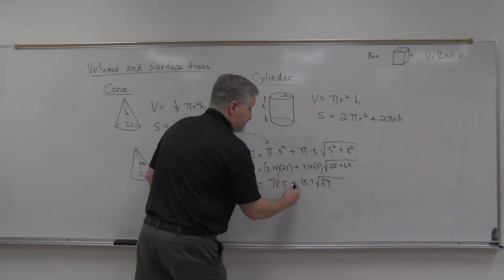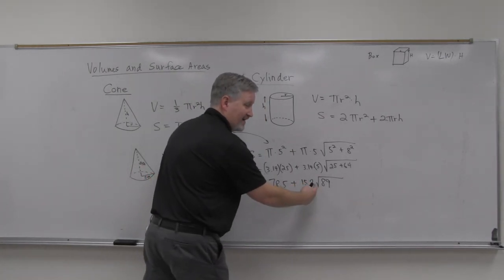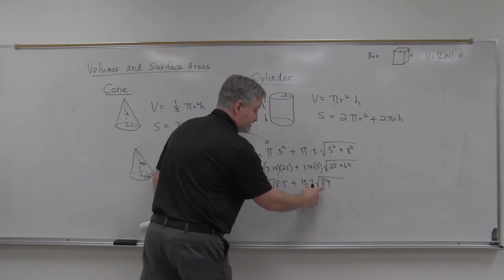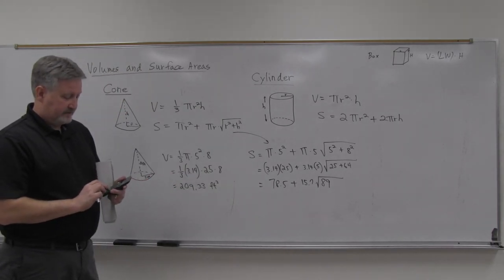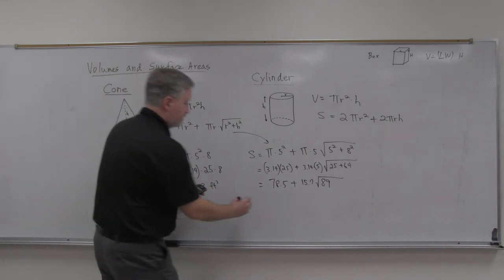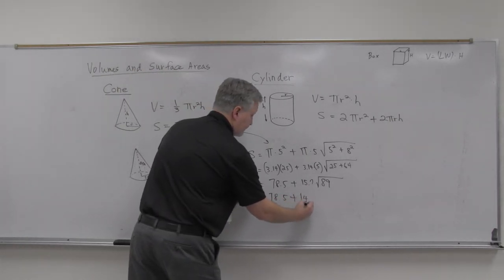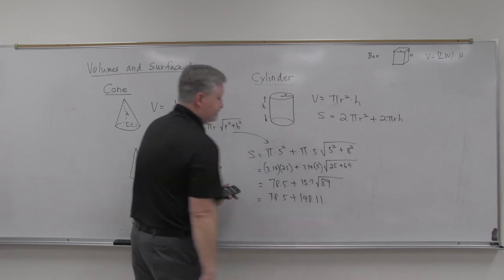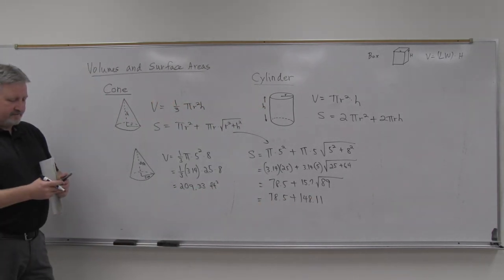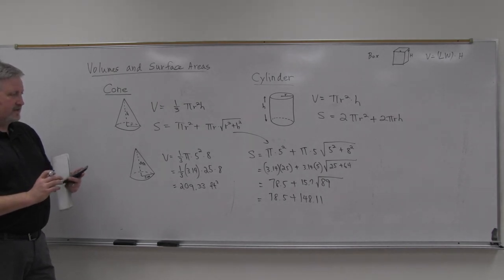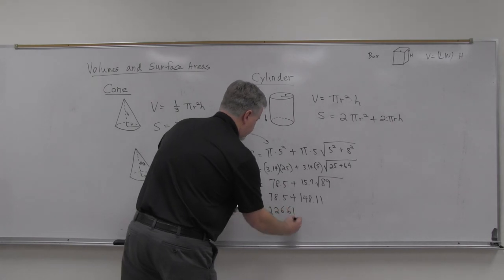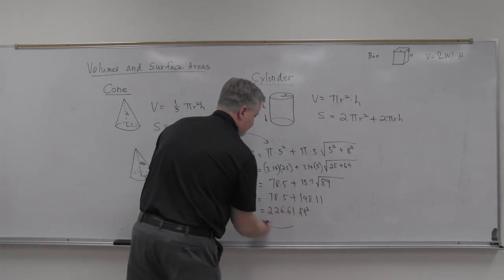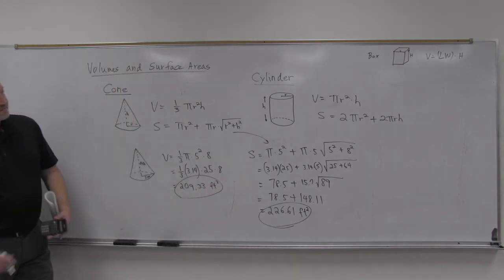And then the other thing is, before you add these, multiply comes before add, right? So when we get it to this, we multiply these first. So that's 148.11, two decimal places. So just a couple things to be careful with there. Plus the 78.5. 226.61, and that's surface area, so that's feet squared. Volume, surface area. Question or concern?